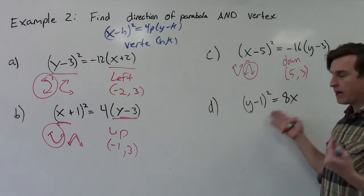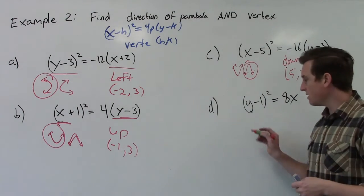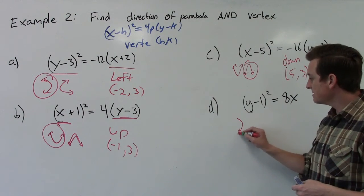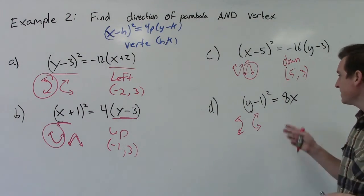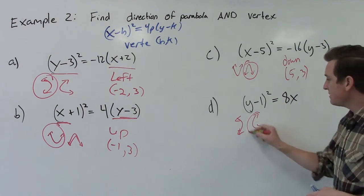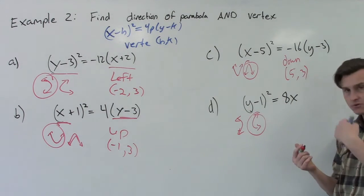Okay, last one here. We got a y-squared parabola. When we have a y-squared, that immediately tells us it's sideways from what we're used to. So it's either going to go left or right. Since we don't have a negative multiplier, this has to be the positive version. So it's going to go to the right.